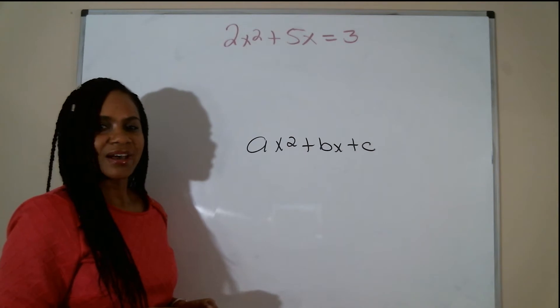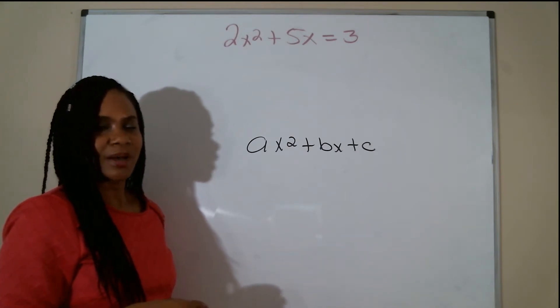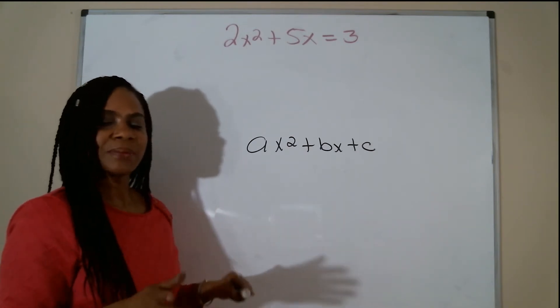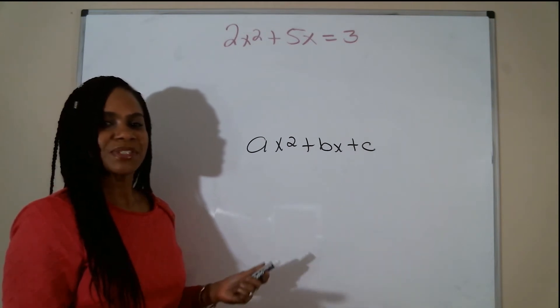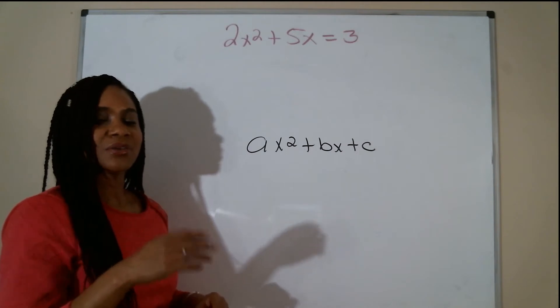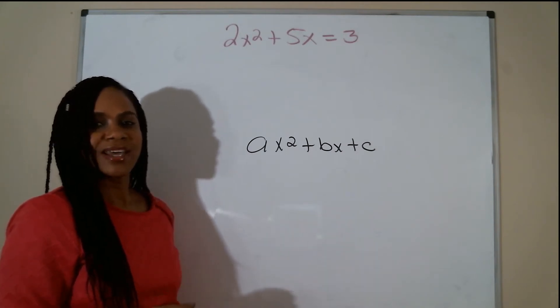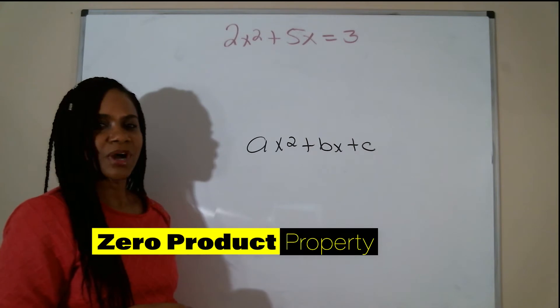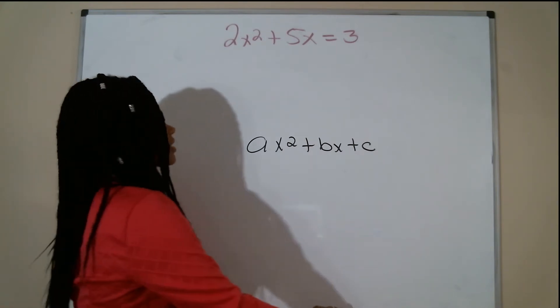I'm going to solve by factoring using the slip and slide method. If you're not familiar with how to factor using that method, check out my video Factoring in this Form Using the Slip and Slide Method, which is linked in the bio section. The only added piece is that I'm going to use the zero product property at the end.